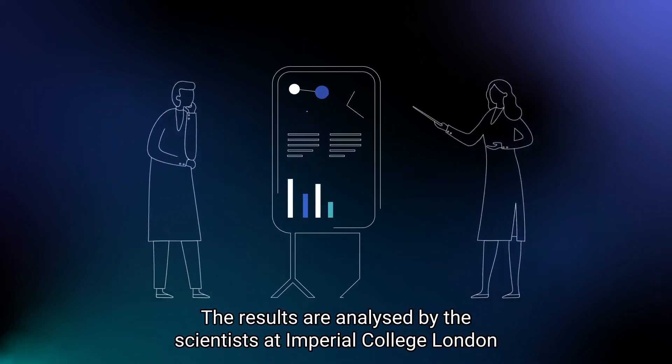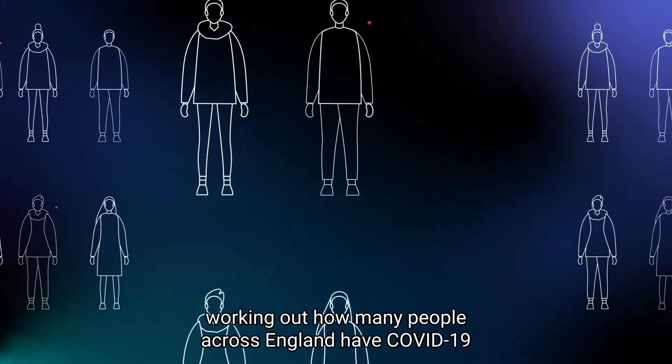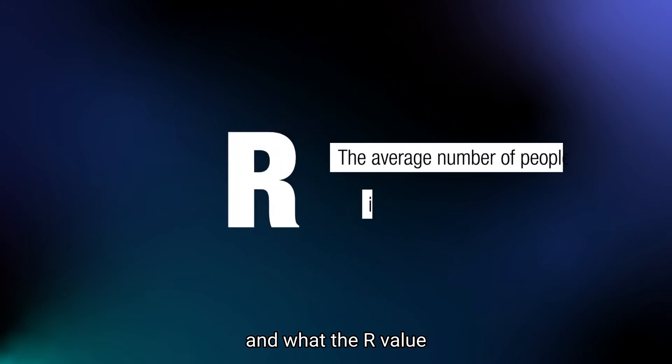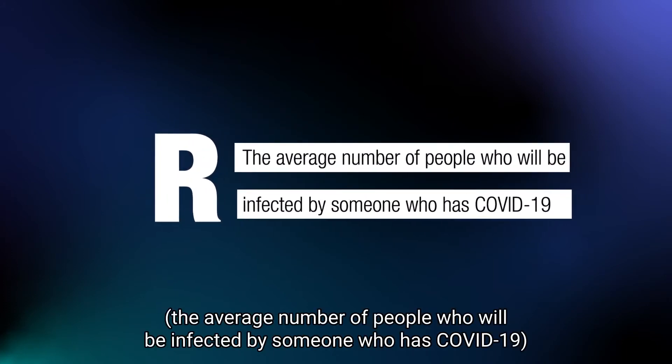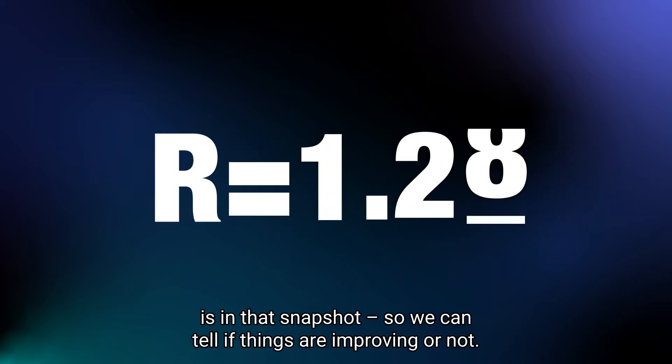The results are analyzed by the scientists at Imperial College London, working out how many people across England have COVID-19 and what the R value, the average number of people who will be infected by someone who has COVID-19, is in that snapshot. So we can tell if things are improving or not.